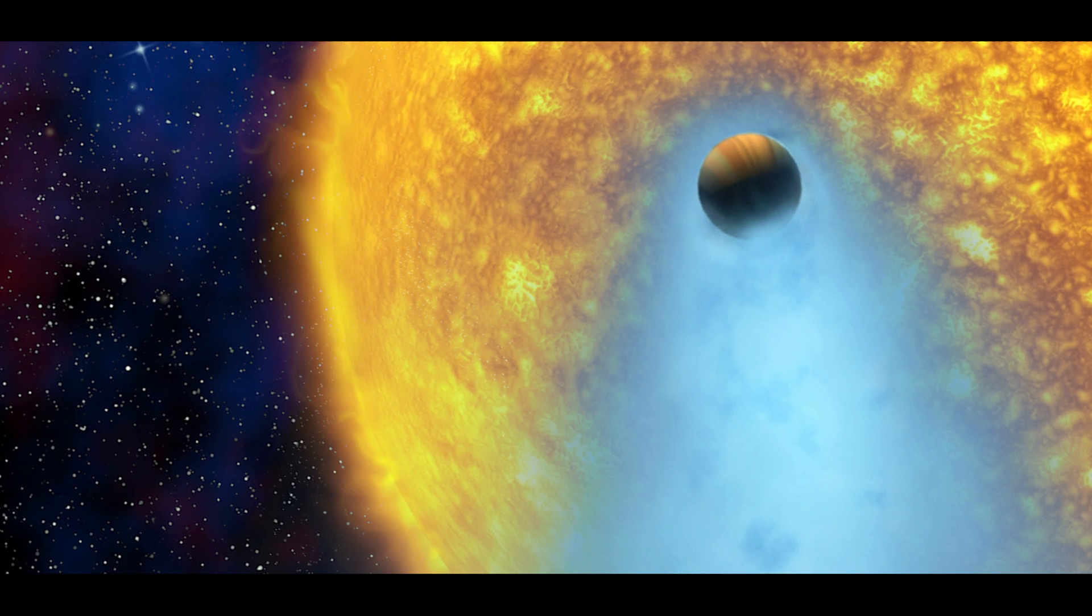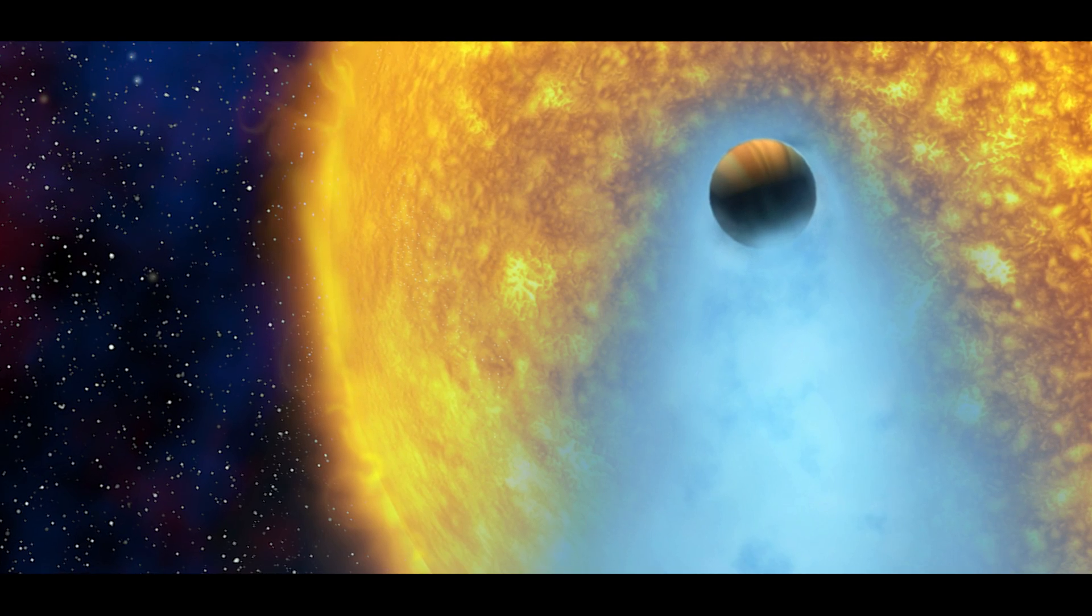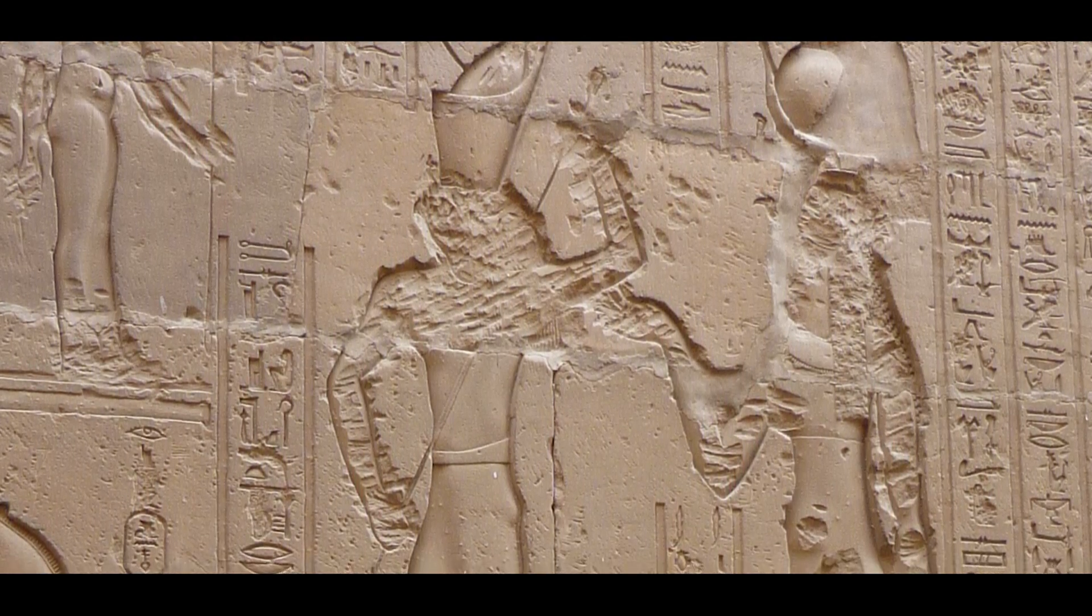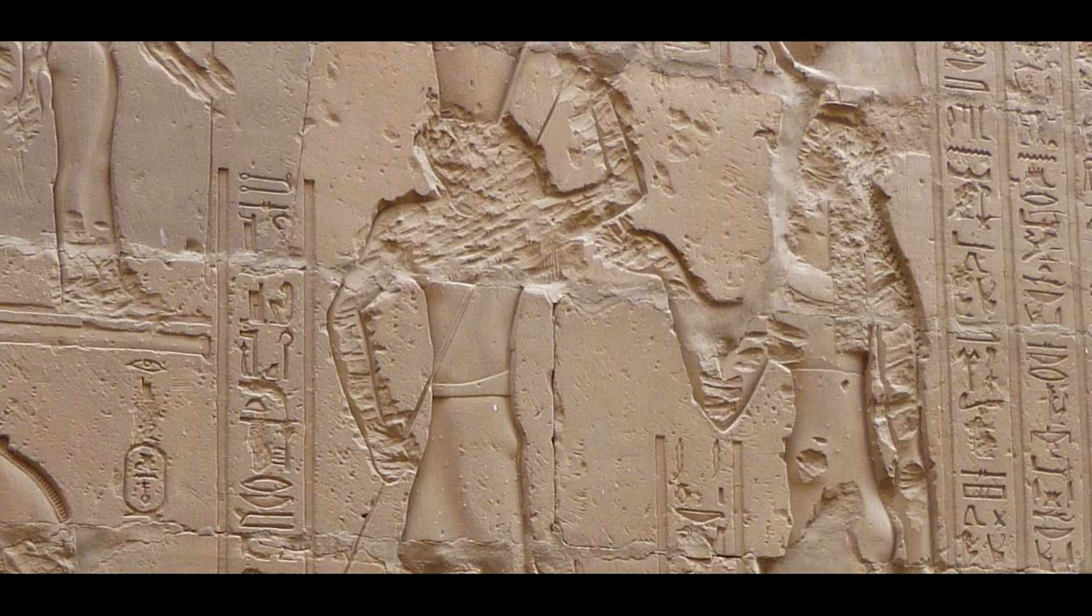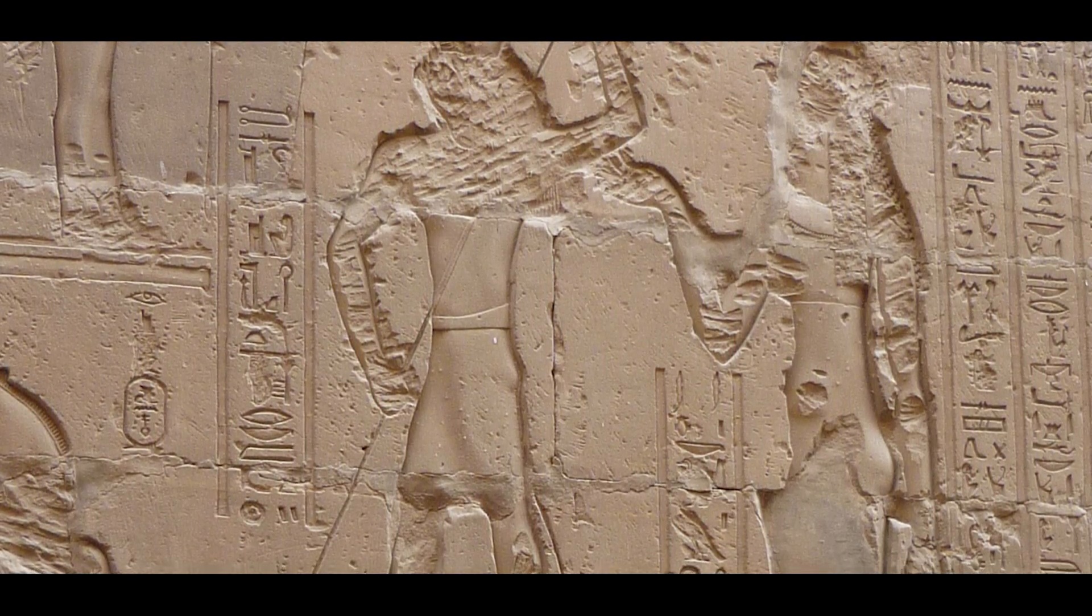This planet became famous because its atmosphere is evaporated by the star, and a kind of comet tail is formed. This is also the reason why this planet has the nickname Osiris, because according to ancient Egyptian mythology, this deity was killed by his brother Seth and cut into pieces to prevent him from rising again.